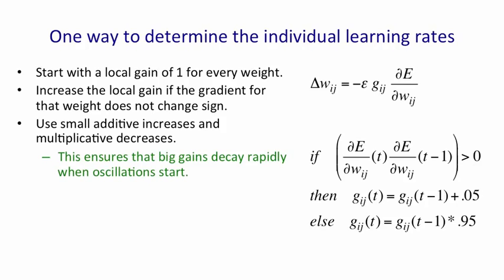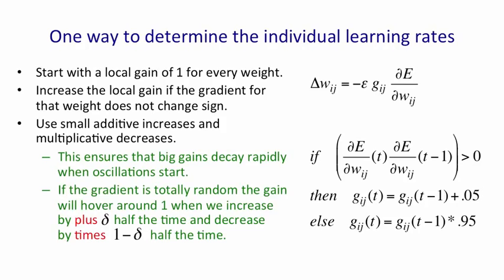It's interesting to ask what would happen if the gradient was totally random. Then you'll get an equal number of increases and decreases, and they have an equilibrium point, which is when the gain is 1. If the gain's bigger than 1, multiplying by 0.95 will reduce it by more than adding 0.05. If the gain's smaller than 1, adding 0.05 will increase it more than multiplying by 0.95 decreases it.